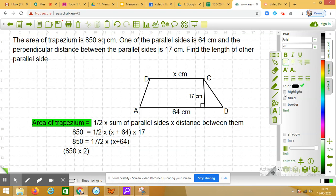I am taking 2 to the left side. So it will be multiplied by 850. Then I will be dividing it by 17 and this is equal to x plus 64.